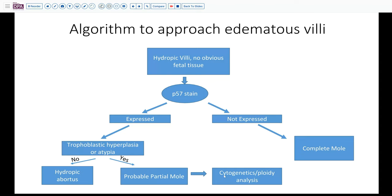You can do ploidy by flow cytometry from formalin-fixed tissue, and so sometimes that is the algorithm that will be followed.